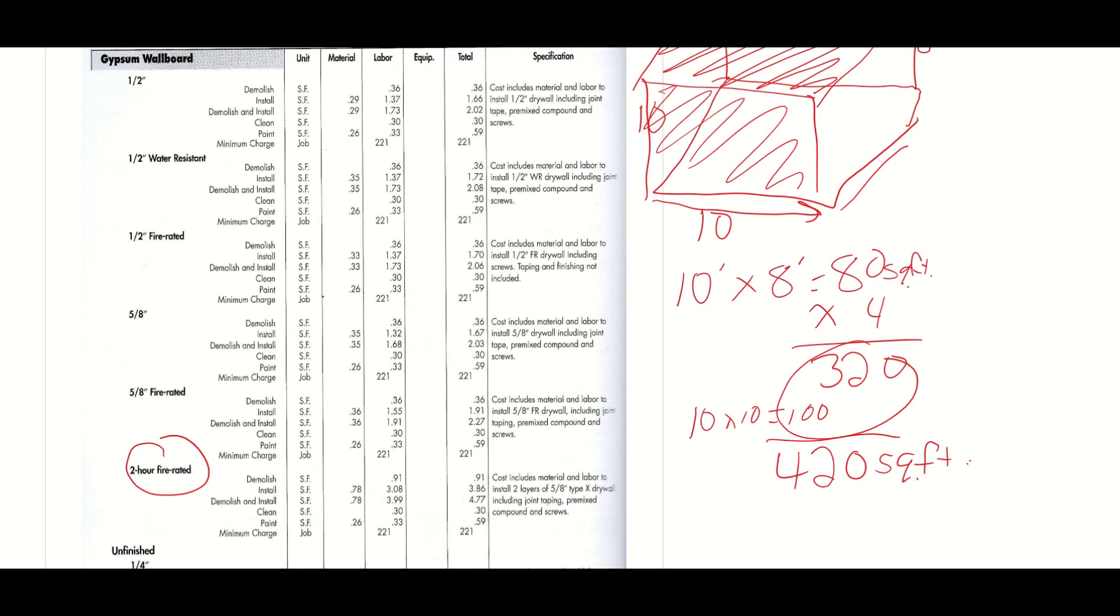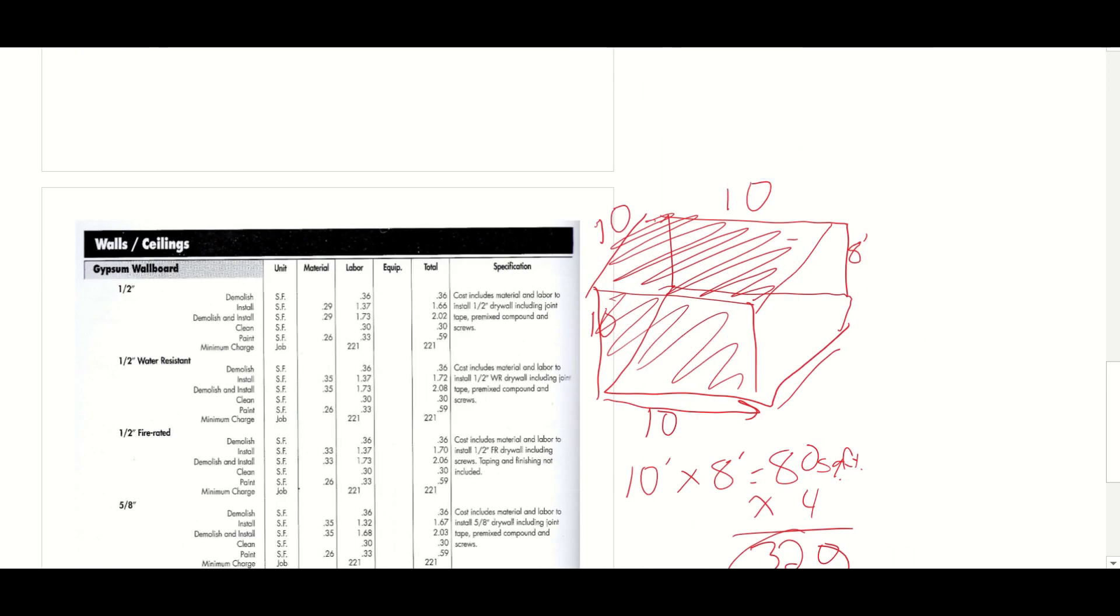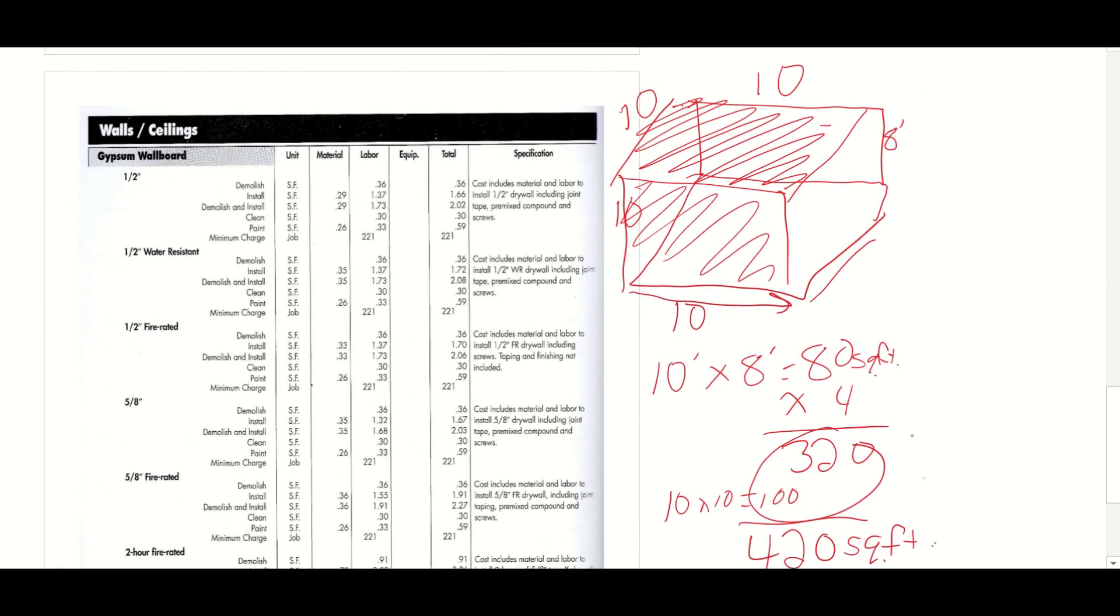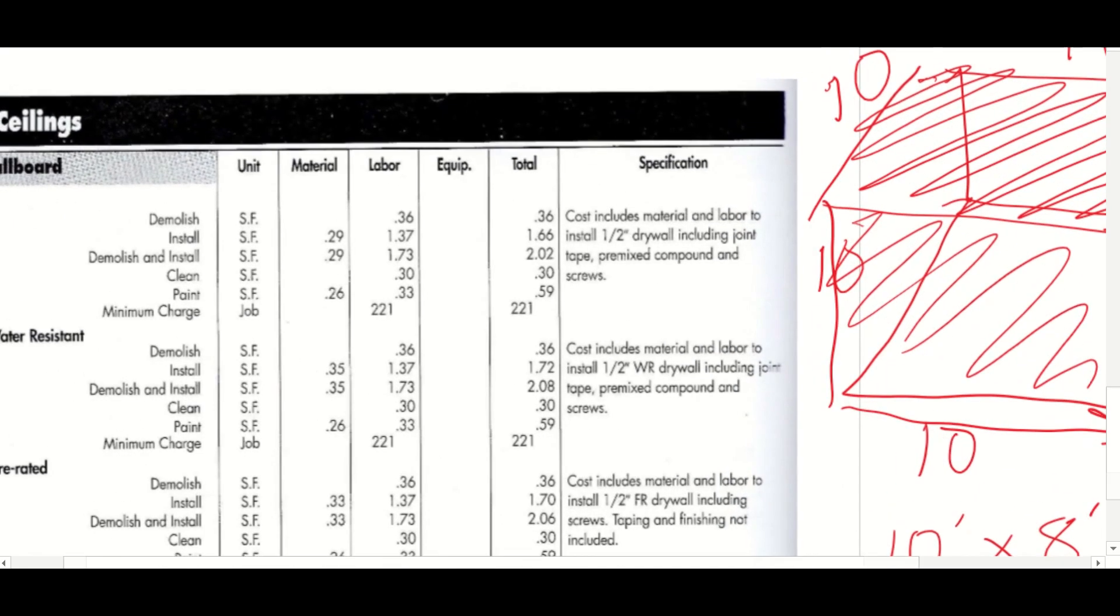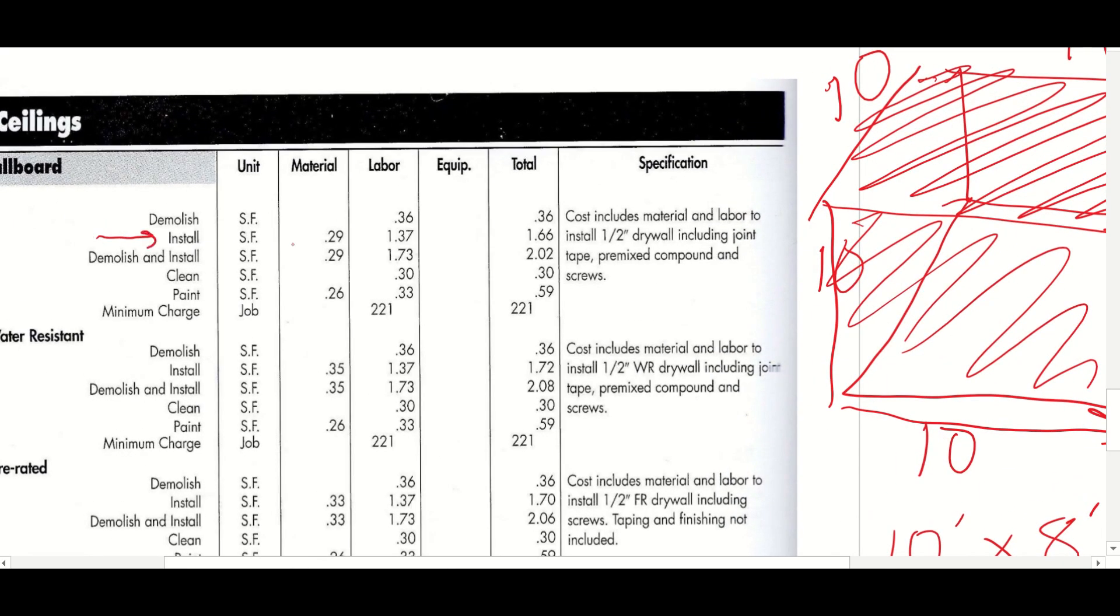If we're doing a two hour fire rated wall, when we did warehouse remodels, anytime you've got two different tenants sharing a unit, they had a two hour firewall between them. That means that if a fire breaks out in one unit, it will take two hours for the fire to burn through that firewall, that drywall firewall. And the reason is that gypsum has fire retardant properties. It actually has a moisture content. So when it heats up, it releases that moisture as steam and that helps retard the fire. Eventually it will burn through though.